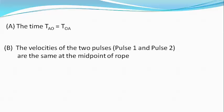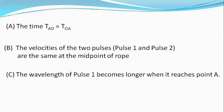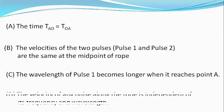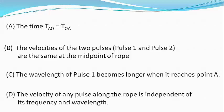Our options are: the time TAO equals TOA. The velocities of the two pulses, pulse 1 and pulse 2, are same at midpoint of the rope. The wavelength of pulse 1 becomes longer when it reaches point A. And the velocity of any pulse along the rope is independent of its frequency and wavelength.